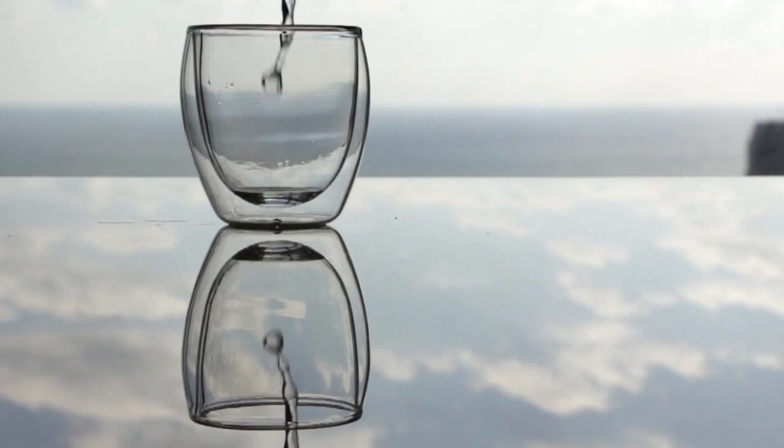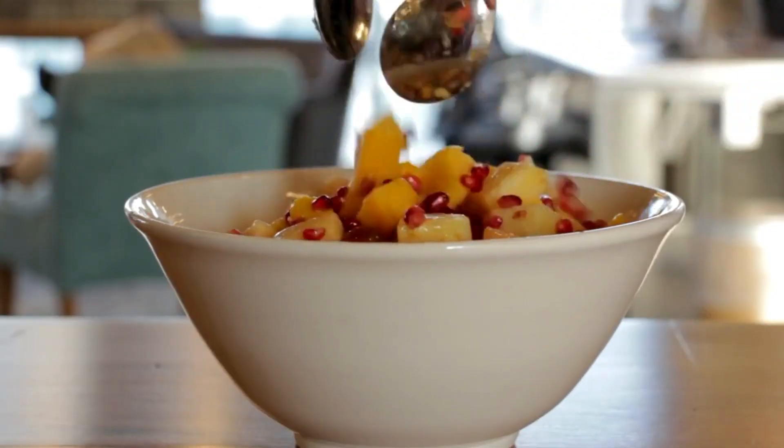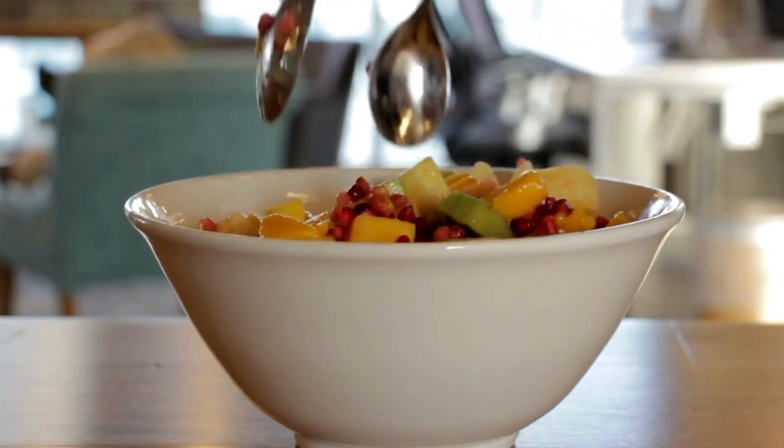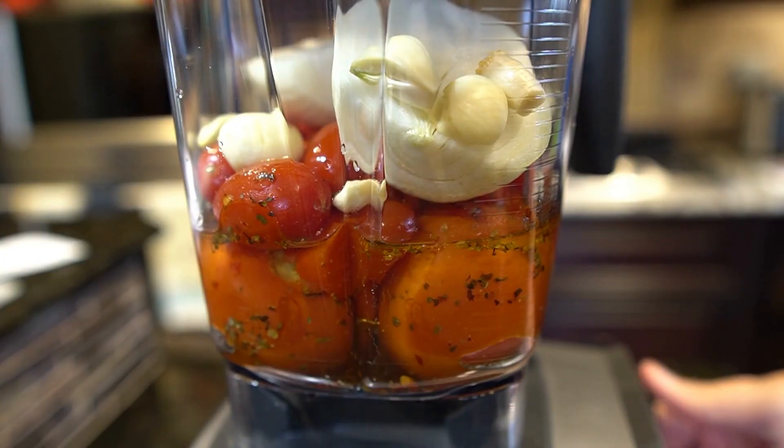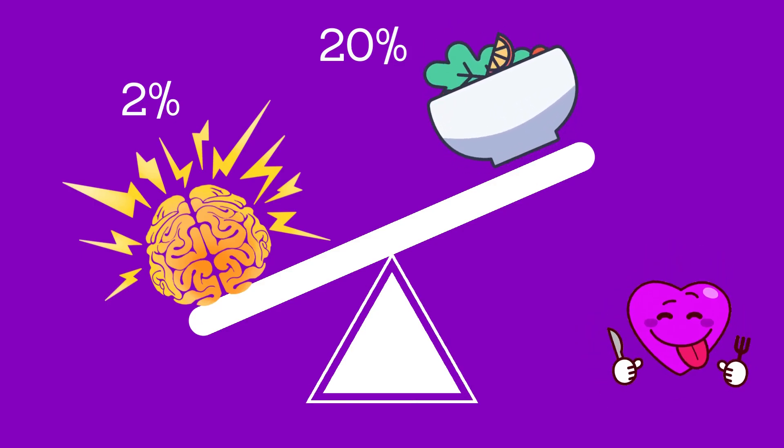Number two: drink lots of water and eat healthy. 20% of what you eat gets used by your brain. Even though your brain only weighs about 2% of your body weight, it uses 20% of the energy. Get plenty of fruit and vegetables.